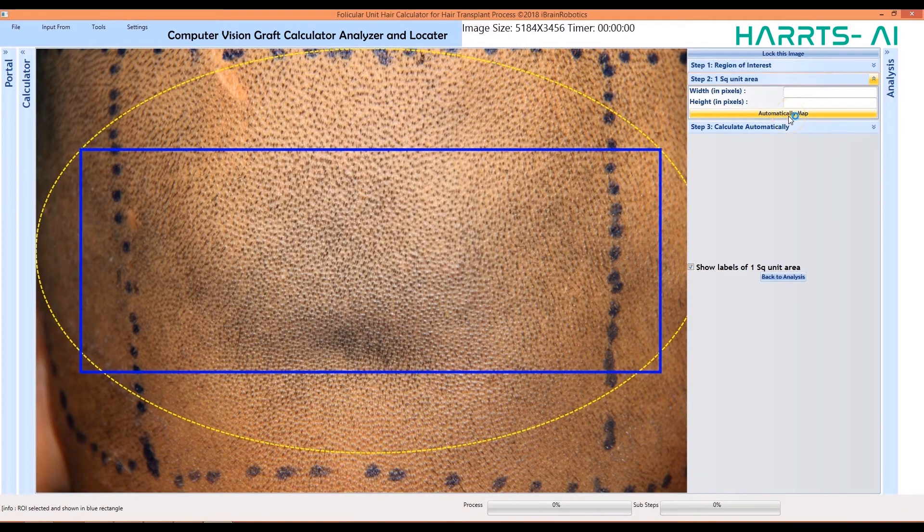Now, define one square unit area in your area of interest. You can either define it manually by entering figures in the boxes, or you can define it automatically.